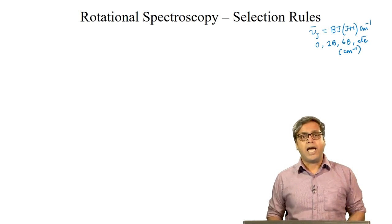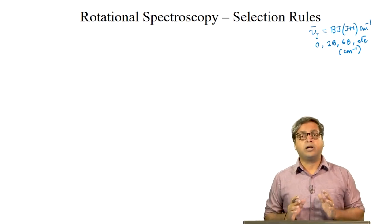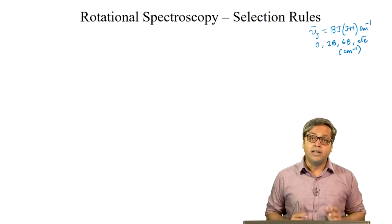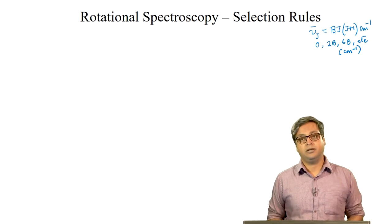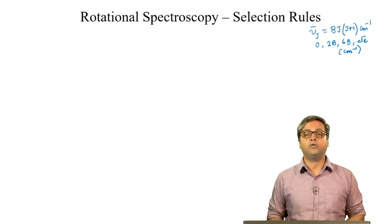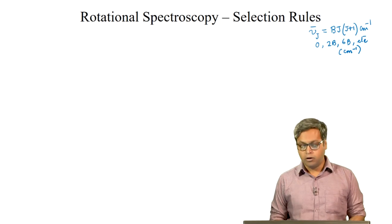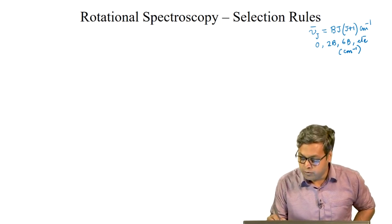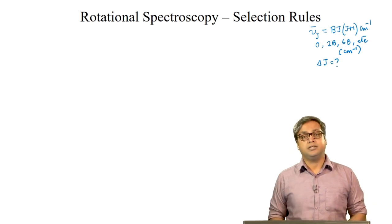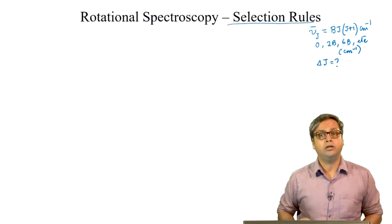Now, as we have discussed, we can only get a rotational spectrum when a transition happens. We have to ask the question: between which levels can the transition take place? In other words, what change in rotational quantum number is allowed for a rotational transition, or what is the allowed value of delta J? To answer this, we need to know the selection rules of rotational spectroscopy.